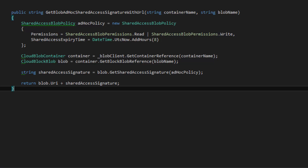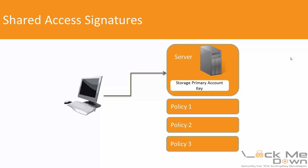There's a problem with this scenario specifically on how we created our policy that might not be so obvious. When we generate a policy in this fashion, it's called an Ad Hoc Policy — we are generating that policy on the fly. When Azure receives a request for a Shared Access Signature that includes an Ad Hoc Policy, the problem is specific to what key Azure uses in the hashing algorithm that generates the signature. Azure utilizes the main storage primary account key as the key in the hashing algorithm for generating the signature. This might not seem like a big deal until you realize you need to revoke that Shared Access Signature. The only way to do that would be to generate a brand new storage primary account key, effectively breaking any application or use of that current primary account key.